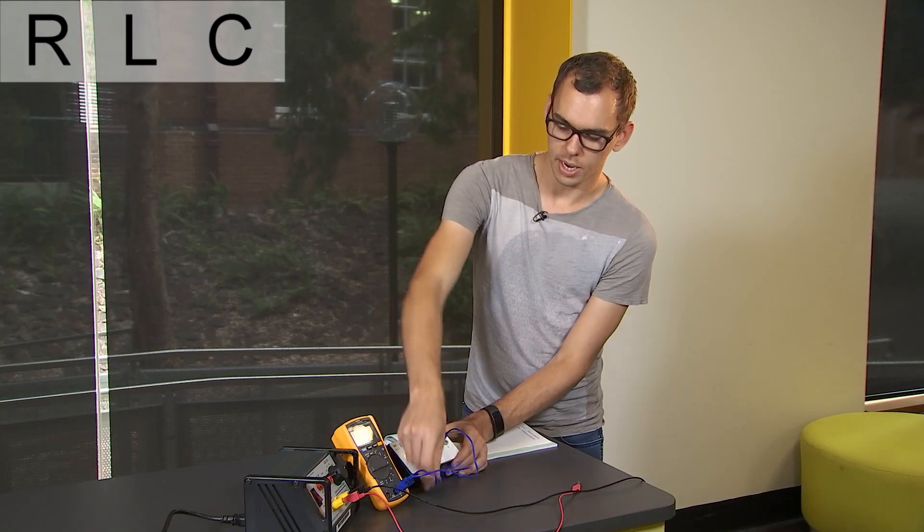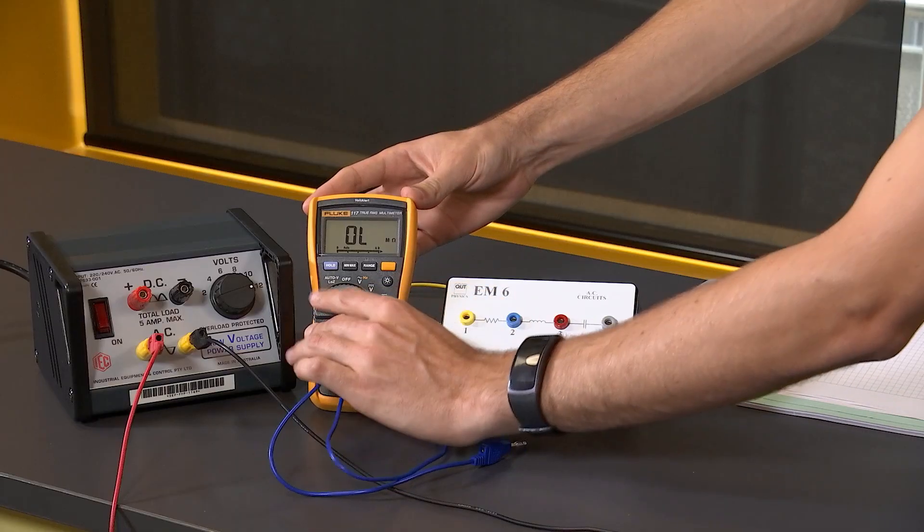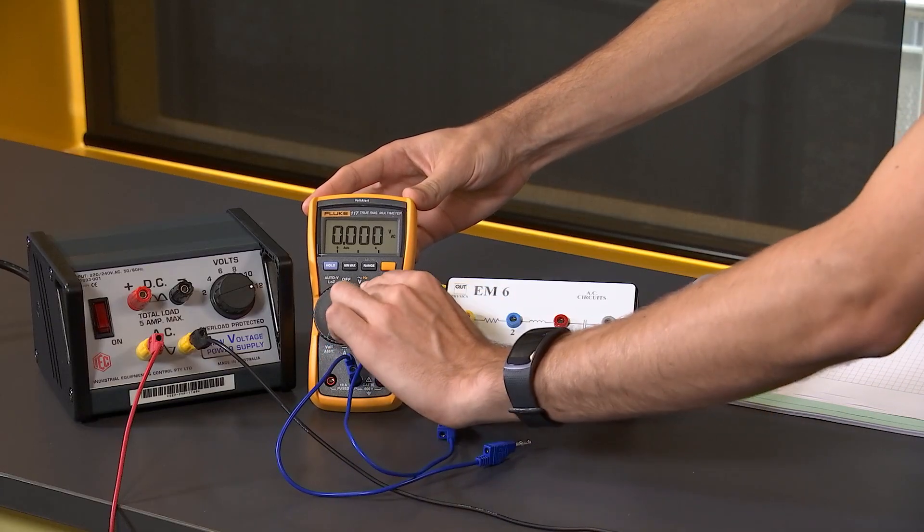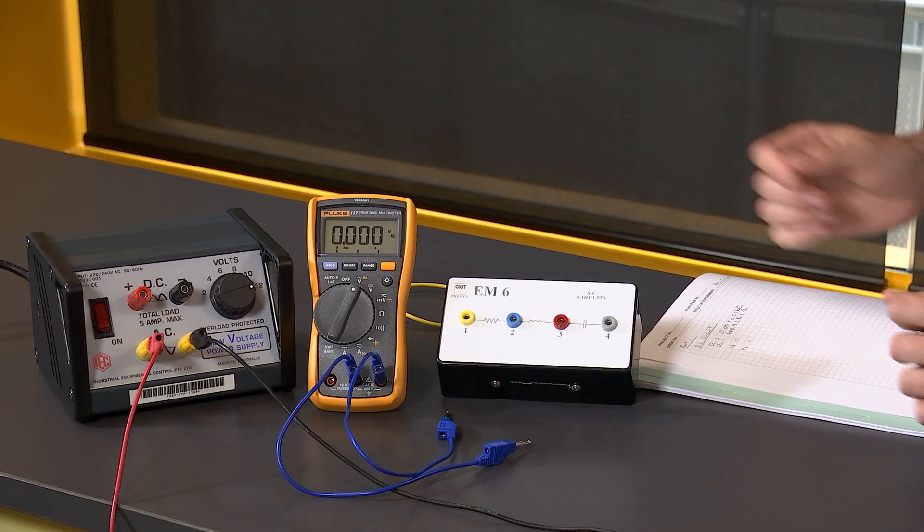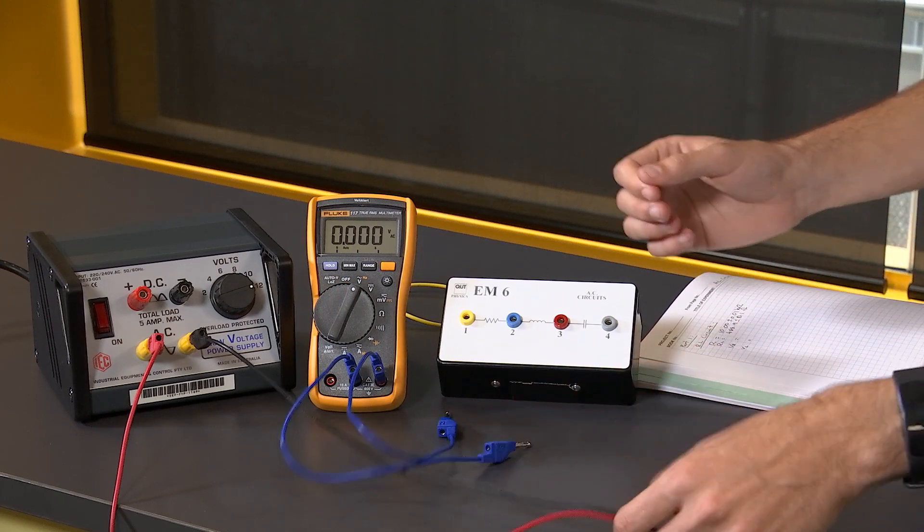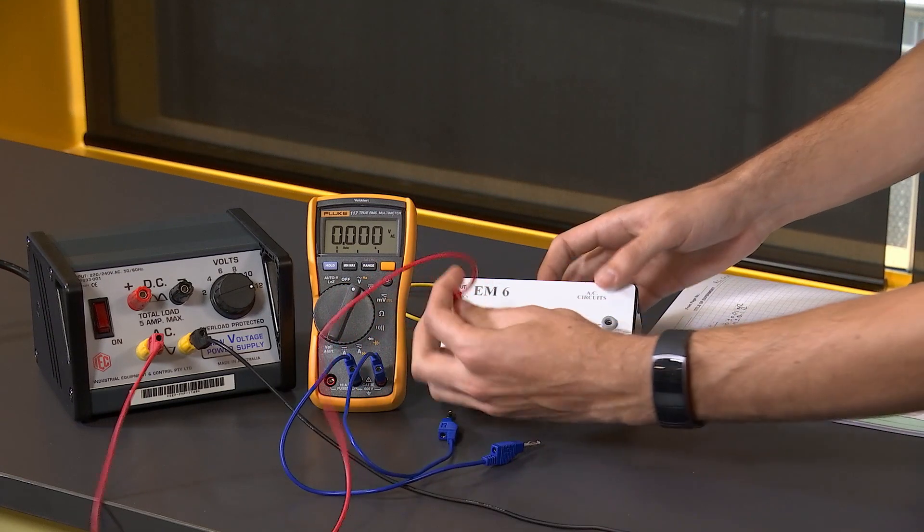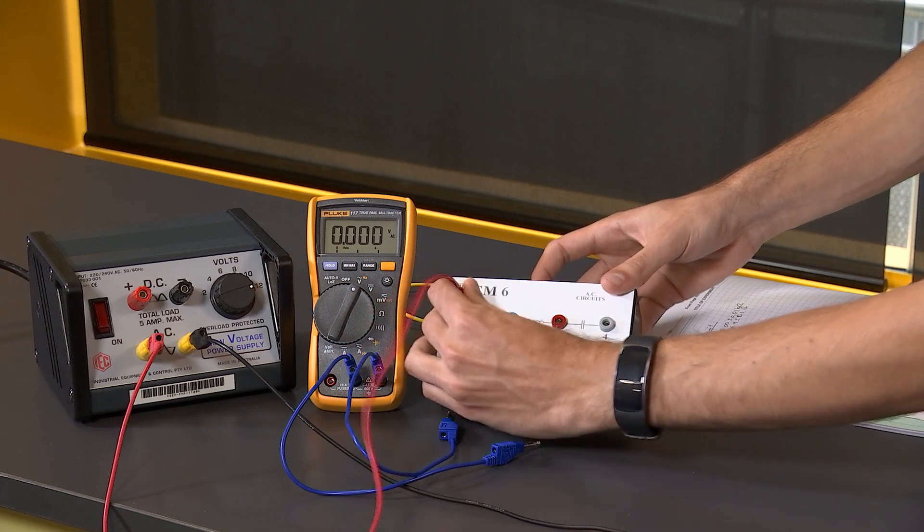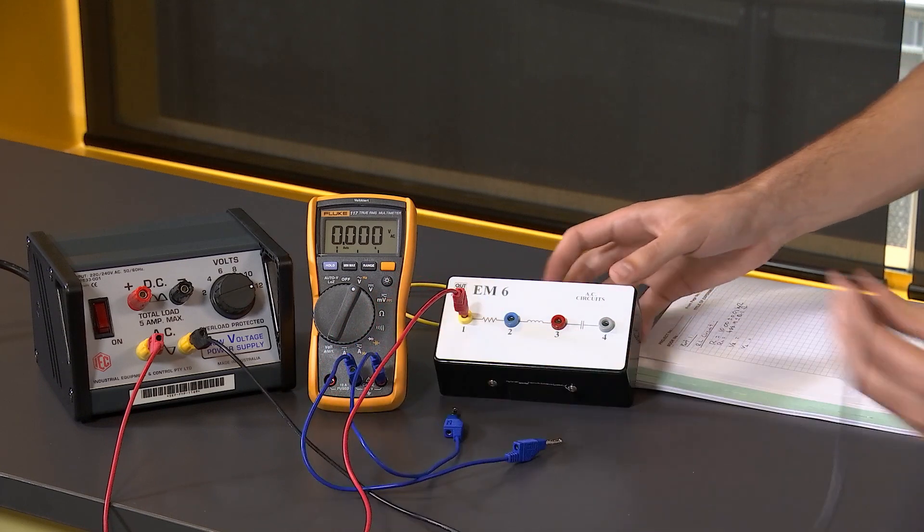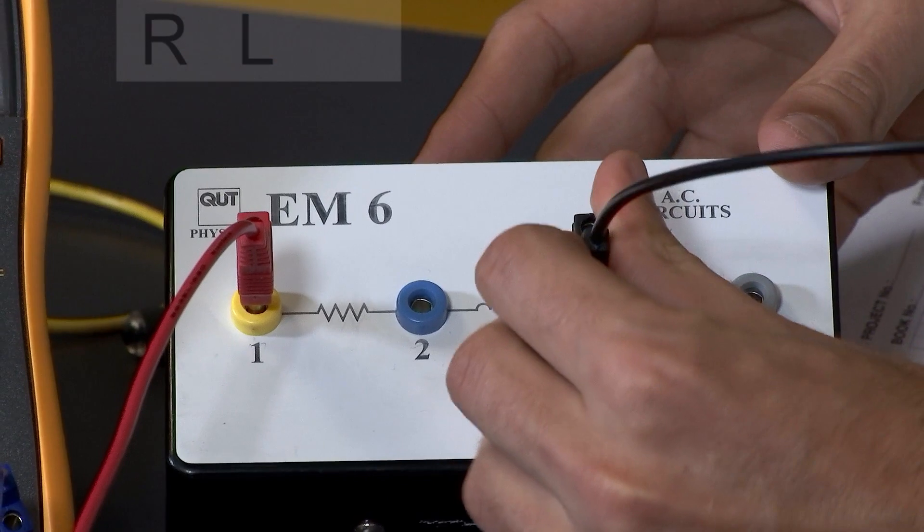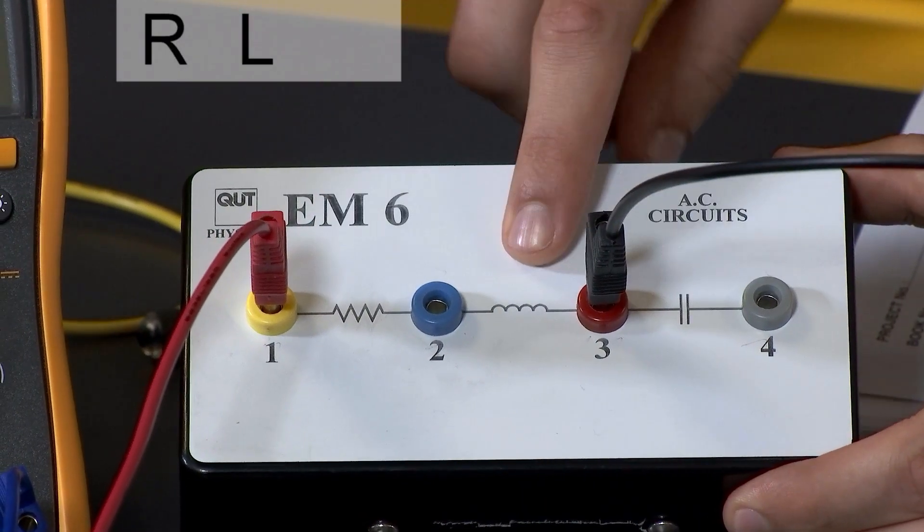Now I'm going to disconnect this and switch my multimeter into AC mode, so we're using an AC signal, and now I'm going to connect the power supply across pins one and three to build the RL circuit.